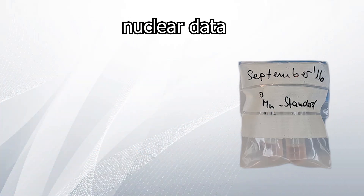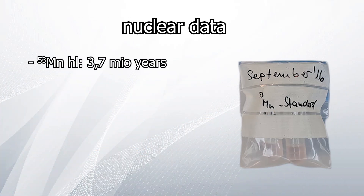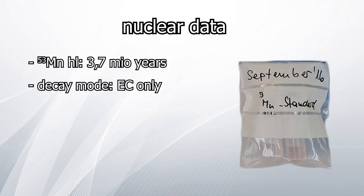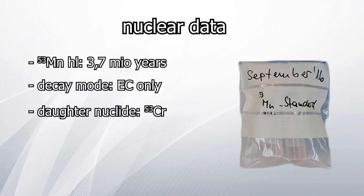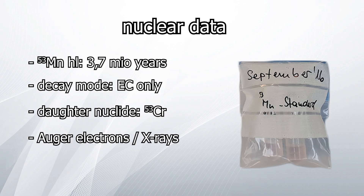Manganese 53 has a half-life of 3.7 million years. It is an electron capture only nuclide and decays into stable chromium 53 without emitting gamma lines. Accordingly, I cannot give you any beta plus energies, but it has Auger electrons and x-ray lines, and I'll get to that in a moment — I've rarely spoken about these on the channel.